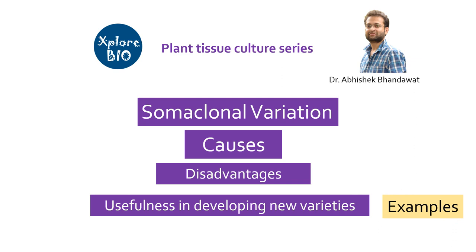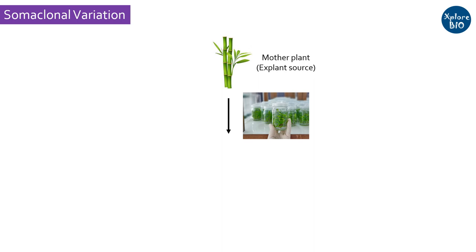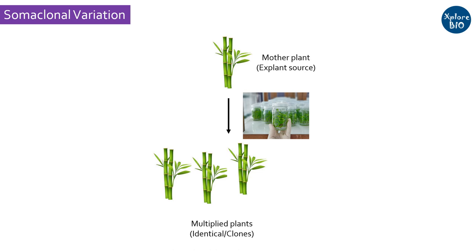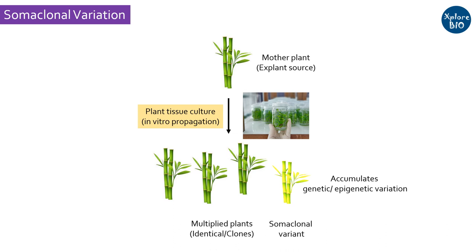One of the major applications of plant tissue culture technique is to rapidly multiply plants that are genetically identical to each other and to the mother explant from which they are derived. But sometimes due to certain reasons, the generated plants may accumulate genetic or epigenetic variations such that the multiplied plants are no longer clones or identical to the mother plant or to each other. This phenomenon is termed as somaclonal variation — genetic or epigenetic changes that occur during in vitro propagation of plants or during plant tissue culture.